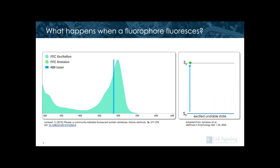When we shine a laser of a 488 line on FITC, the electrons in the fluorophores are excited, but they're in an unstable state. Some energy is lost through heat or other processes before the electrons return to their ground state. As such, lower energy is released, but at a higher wavelength of light. We call this a Stokes shift.